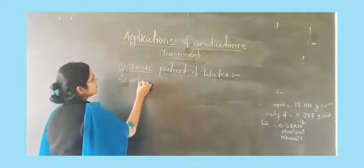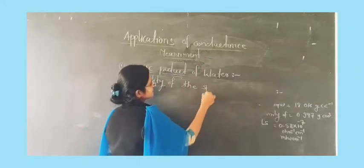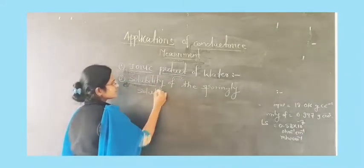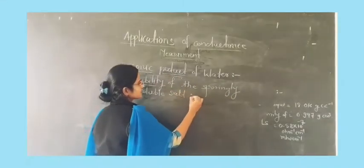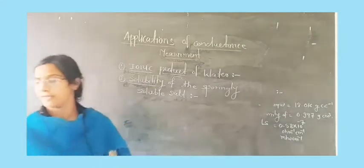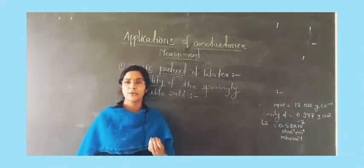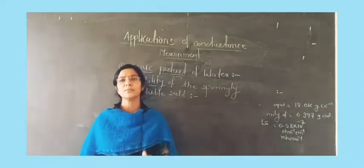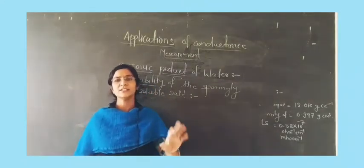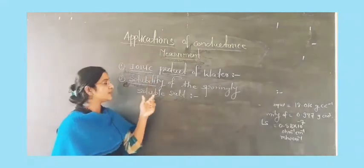To find out solubility of the sparingly soluble salt, as we know that sodium chloride, NaOH, hydrochloric acid, H2SO4 are directly soluble in water. You just take the electrolyte, add into the water, and it is easily soluble. Such a type of electrolyte is known as a strong electrolyte, or completely soluble in the solvent.